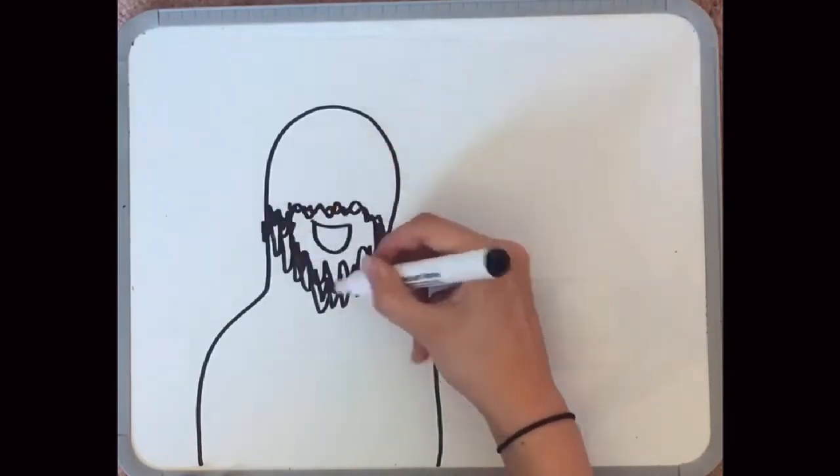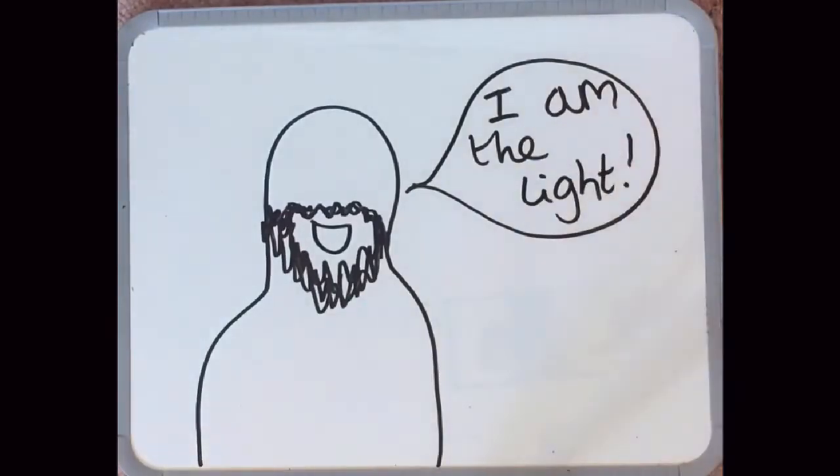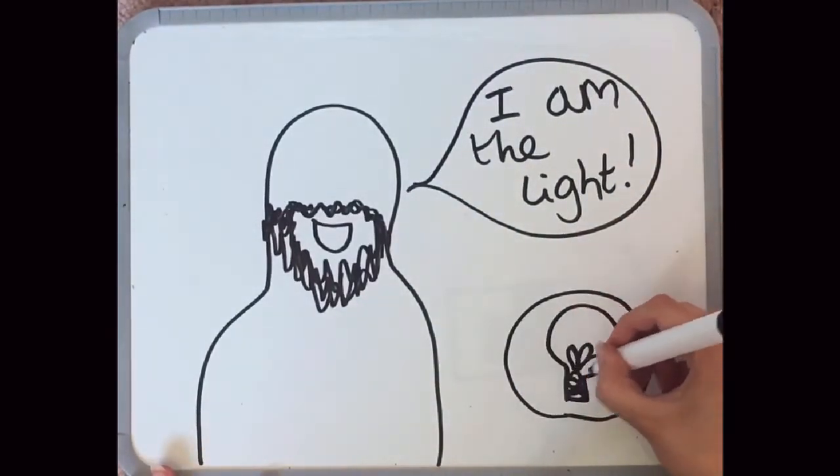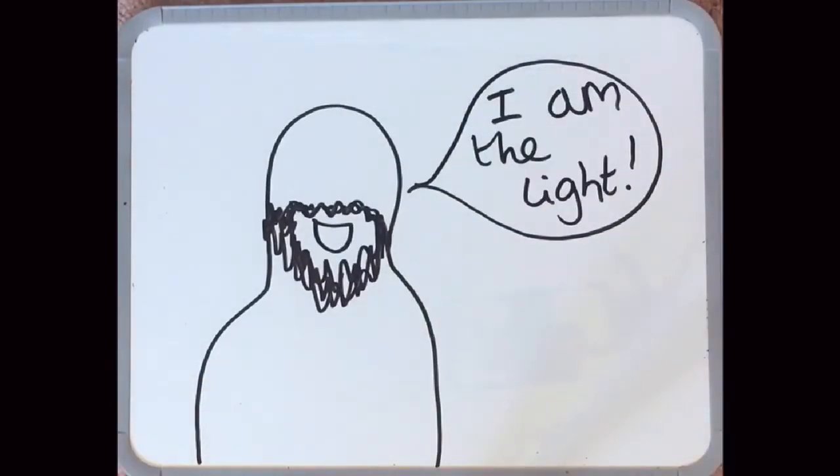And this is what Jesus does for us. Jesus says, I am the light. And no, it doesn't mean he's a light bulb. It means that when Jesus is around, no amount of darkness can stop him.